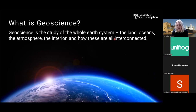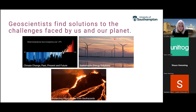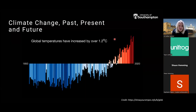At the most basic level, geoscience is the study of the whole earth system — the land, the oceans, the atmosphere, the interior of our planet, and how all these things are interconnected. As geoscientists we study the past, present, and future of our planet, and we even study other planets in our solar system. A key area is finding solutions to the challenges facing our planet — understanding climate change, finding sustainable energy solutions, and protecting populations from geohazards.